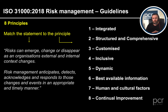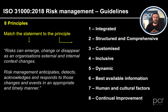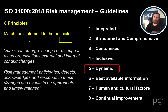Risks can emerge, risks can change, and risks can disappear as the external and internal context of the organization changes. Nothing stays the same. Our internal context can change if the external context changes — really, really important. We've got to be monitoring this all the time because those risks are going to change. Pointless having a risk register that's sat there for months on end; it needs to be reviewed. Risk management anticipates, detects, acknowledges and responds to those changes in an appropriate and timely manner. Which principle does that fit best with? Dynamic.